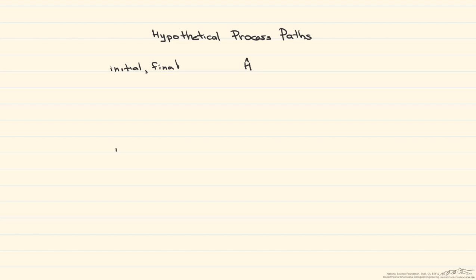So if we have to find the change in enthalpy during a process, here's our enthalpy and we wanna find the change. That's equal to the enthalpy of the final state minus the enthalpy of the initial state. But what happens if you don't know these two numbers? That's where this hypothetical process path for state functions works. You can construct this process path where you know all the states in between, you sum them up, and you end up with the delta H, or the change in enthalpy for the same process.